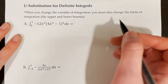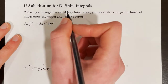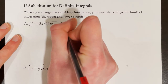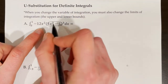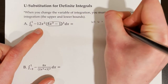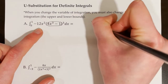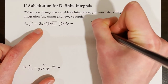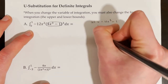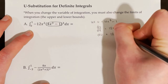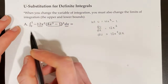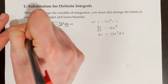First, we're going to treat this like indefinite integration. We need to set something equal to u. In this case, I'm going to set 4x cubed minus 1 equal to u because that is inside another function — it's inside a cube function. So we let u equal 4x cubed minus 1, then take the derivative: du/dx equals 12x squared. Moving dx to the other side, du equals 12x squared dx. We can see that we have a 12x squared and dx in our original integral, so that works very well.